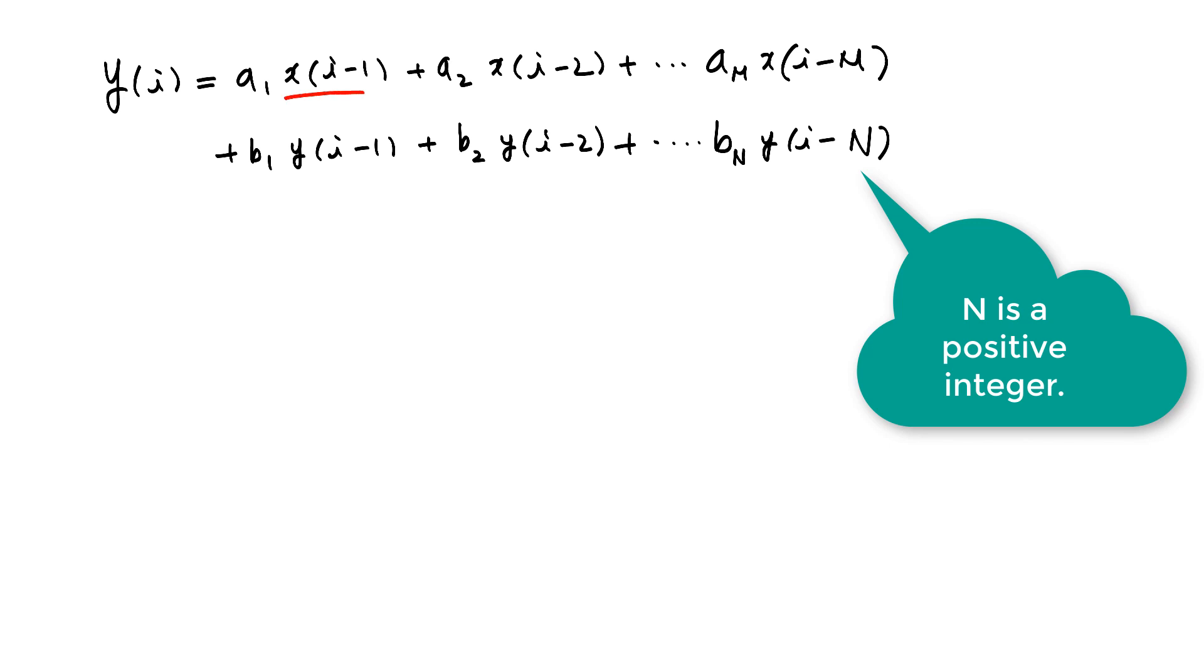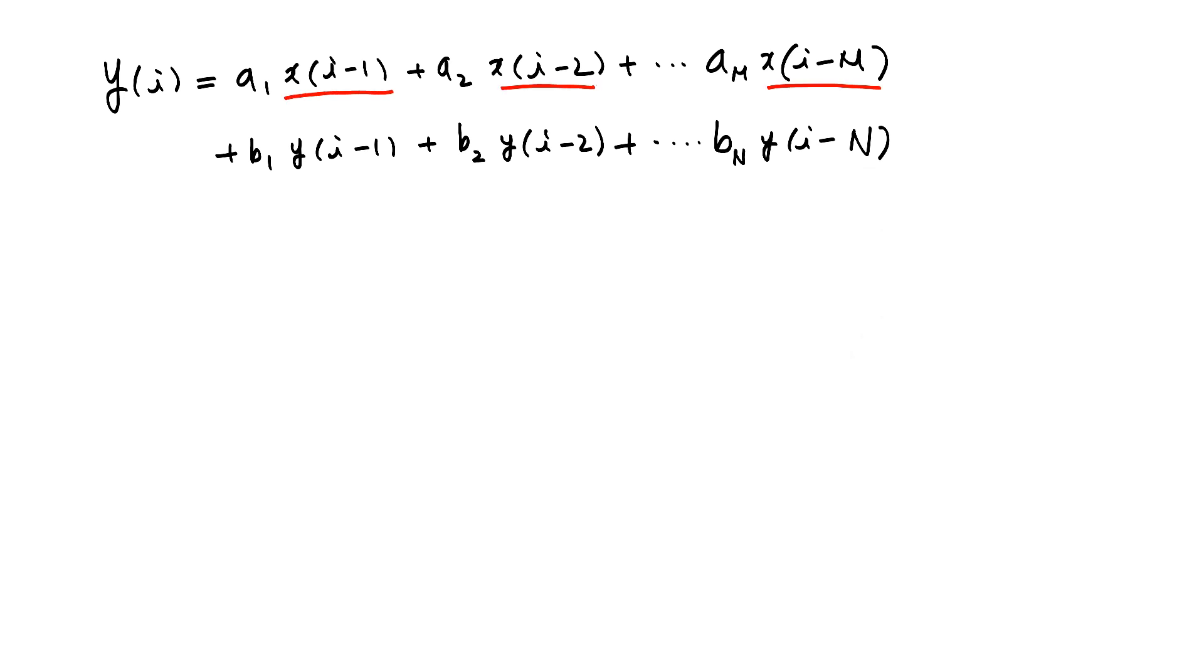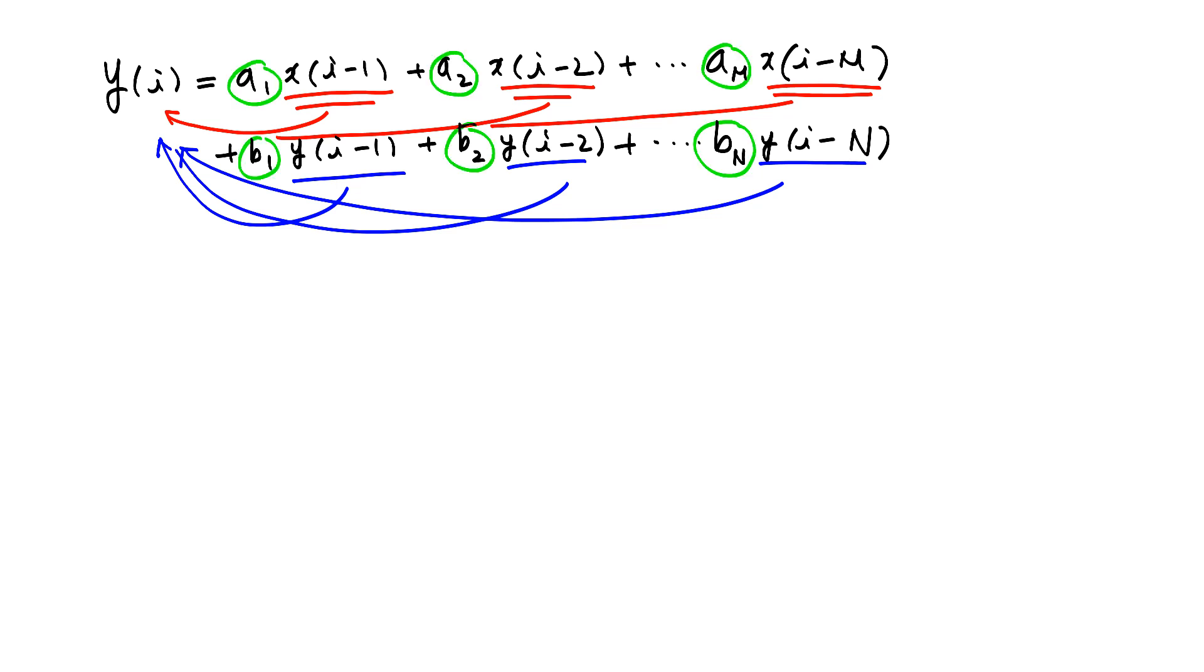So here we have X terms and our model is telling us that all these X protein concentration values are affecting current Y protein concentration. And we also have these Y values and all these previous Y protein concentrations are affecting the current Y protein concentration. And the magnitude of each contribution is represented by these parameter values.